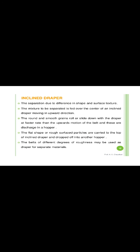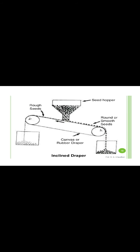The inclined rubber belt separator performs separation based on shape and surface texture. The mixture to be separated is fed over the center of an inclined belt moving in an upward direction. Round and smooth grains roll down faster than the upward motion of the belt and are discharged into one hopper. Flat or rough surface particles are carried to the top of the inclined belt and dropped into another hopper. Belts of different degrees of roughness may be used to separate materials. Generally, both plastic belts and rubber conveyor-type belts are used.